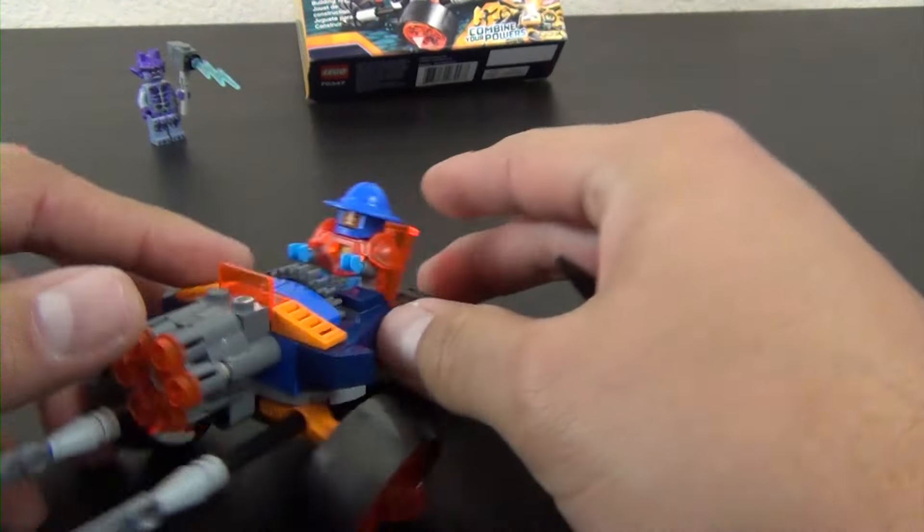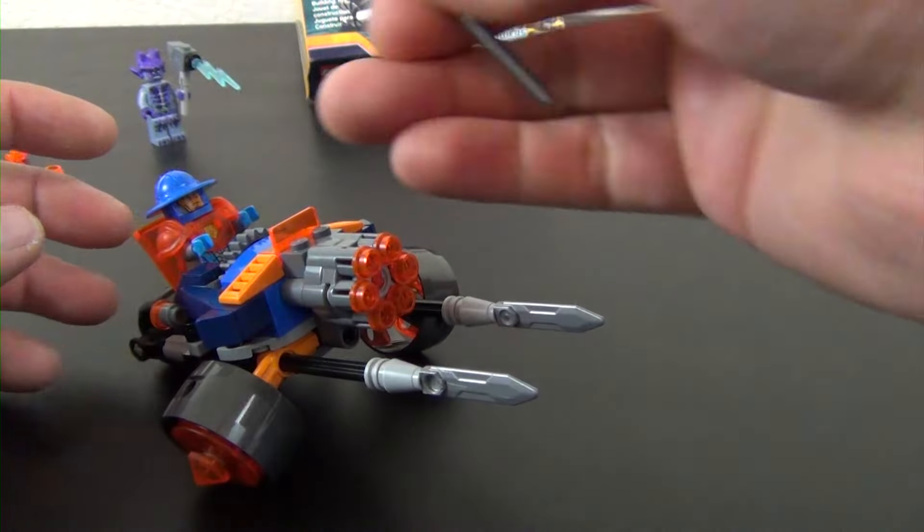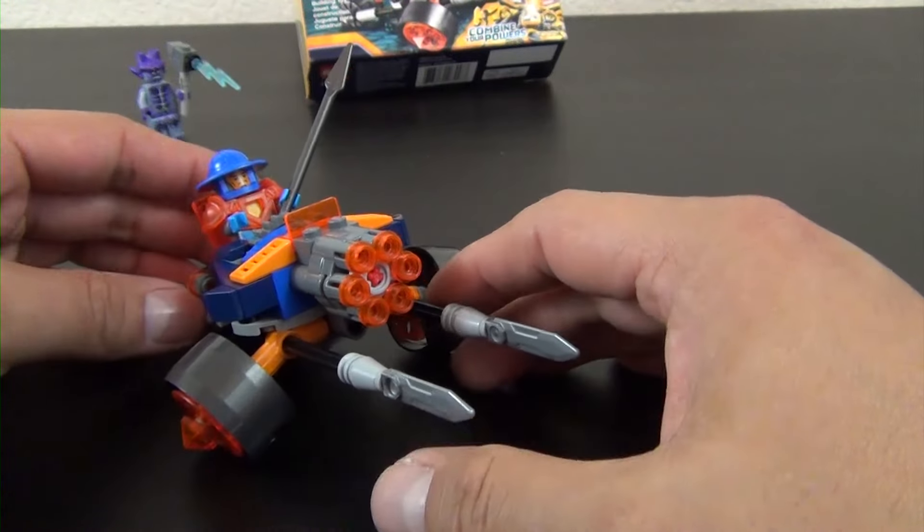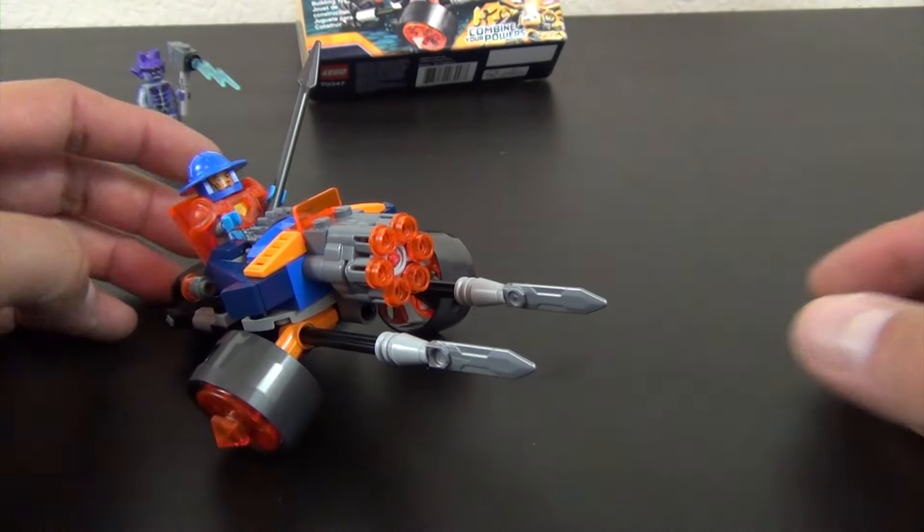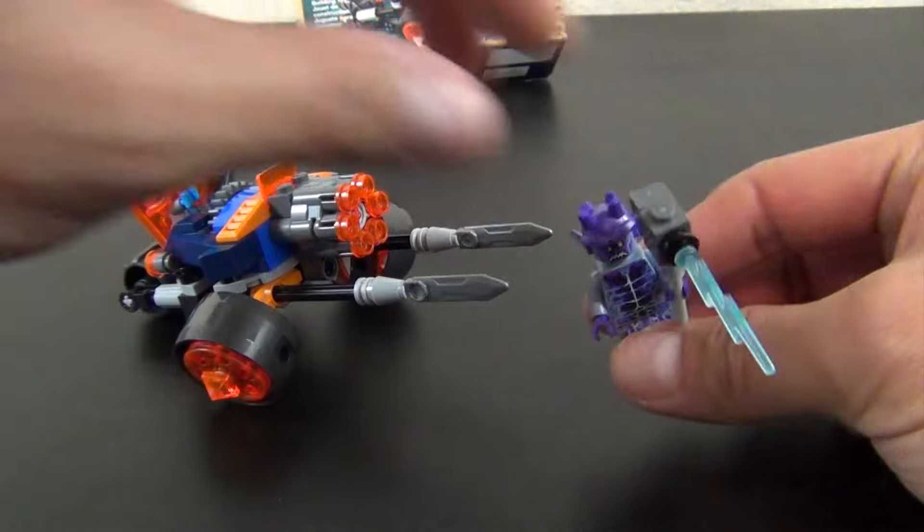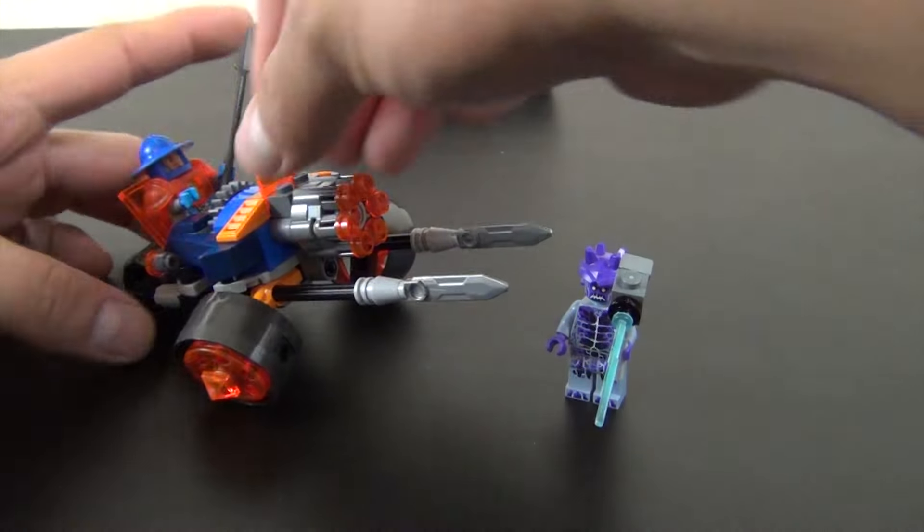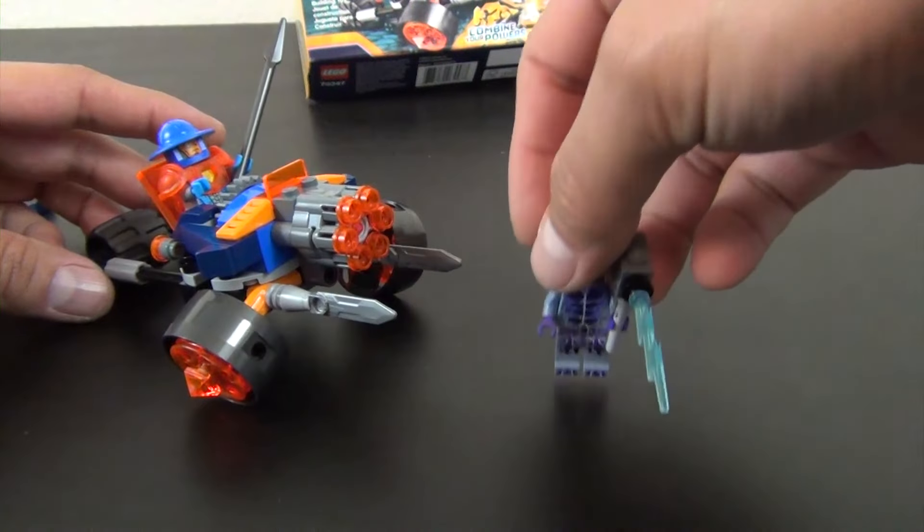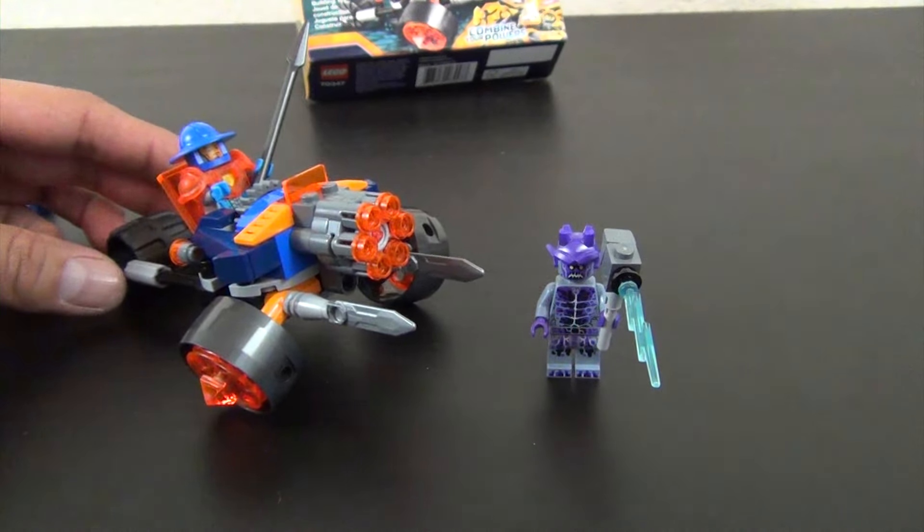All right, so we'll put our King's Guard in there. His little spear, I guess he can still hold on to it, it's really not going to do him any good because the little gun here does a little bit better. Let's check out the stabbing action, yep that works. I kind of like that play feature better than the shooting of the studs.